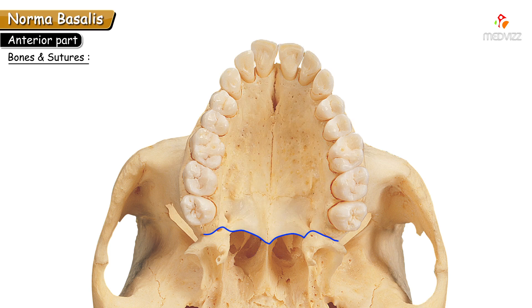Looking at the posterior border, it is identified by a projection which is known as the posterior nasal spine. Now let's see the bones contributing to the formation of the hard palate.